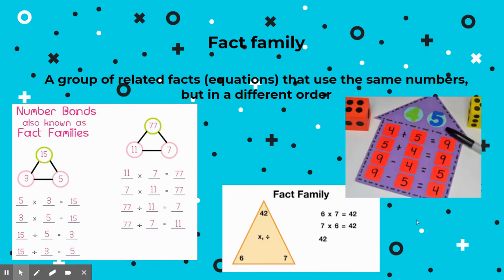Fact families — we've seen them in addition and subtraction, and now we're seeing them in multiplication and division. Remember, there are three numbers that are interchanged and you can make different problems, but they only use those three numbers. They are the fact family. Some people call them number bonds.